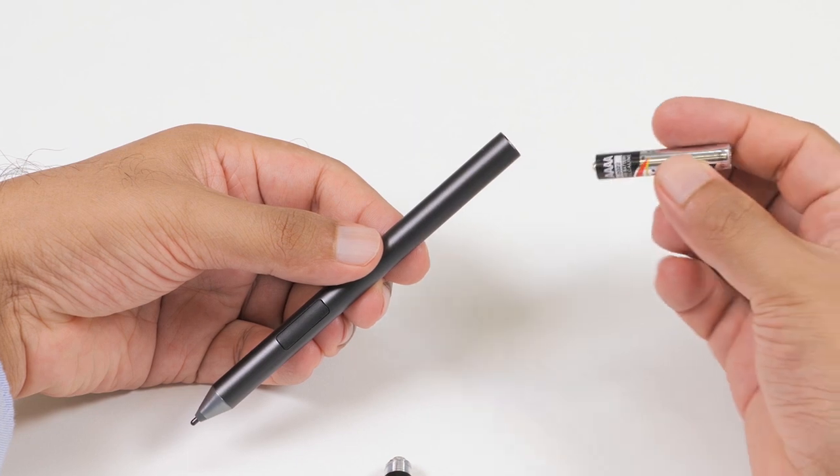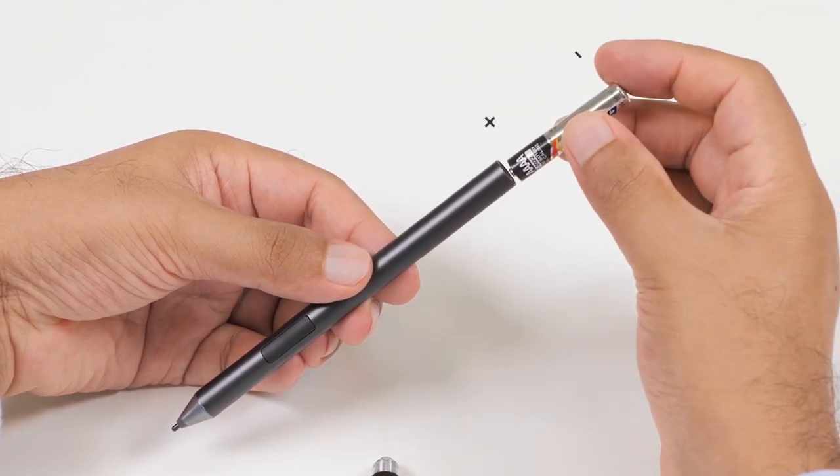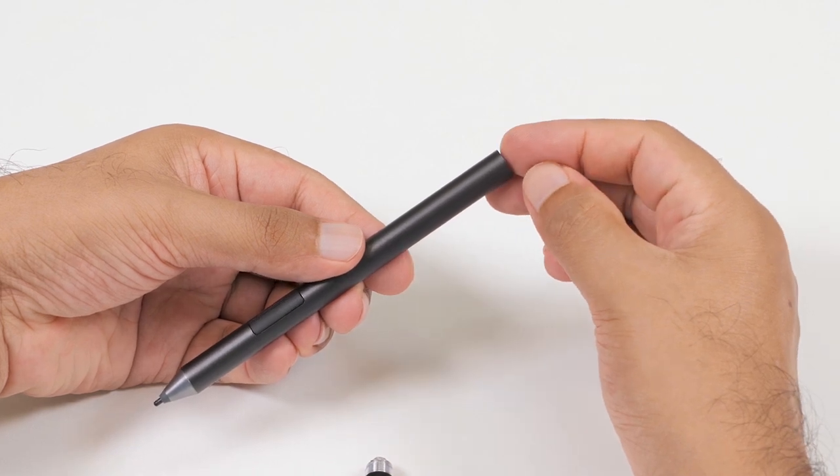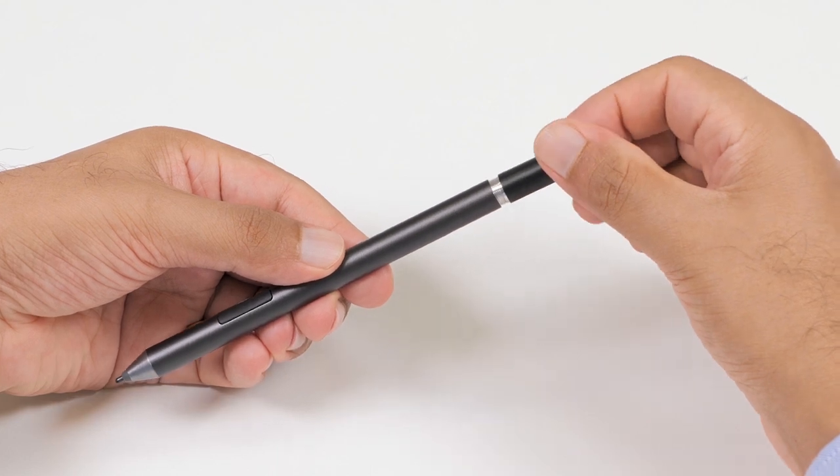After securing the coin cell batteries, slide the quadruple A battery into the bottom of the pen with the positive side pointing towards the pen tip. Place the top of the pen onto the bottom and twist it clockwise to tighten.